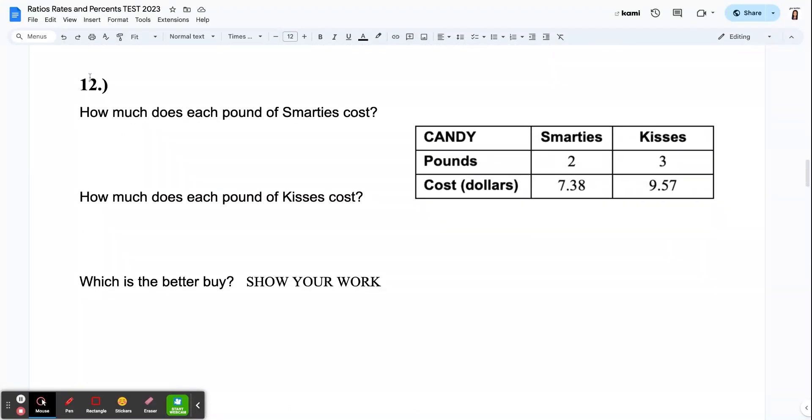Number 12 is the same concept. Here is a comparison and you're trying to find the better buy. So you are comparing the cost of Smarties and Kisses. I want to know how much does each pound of Smarties cost and how much does each pound of Kisses cost. So these are just kind of where your answers go. Down here is where you're going to show me your work. What did you enter in your calculator? And then tell me which one's the better buy.